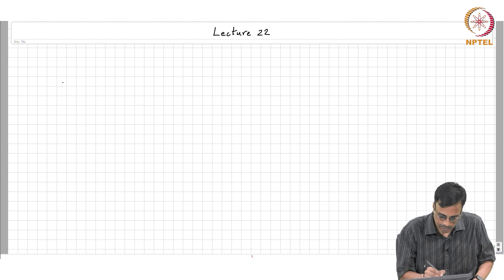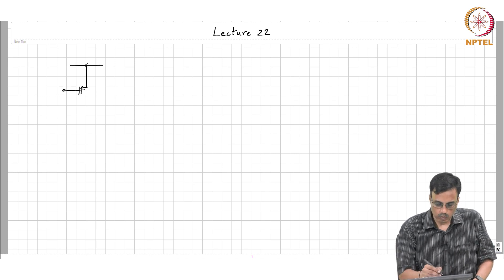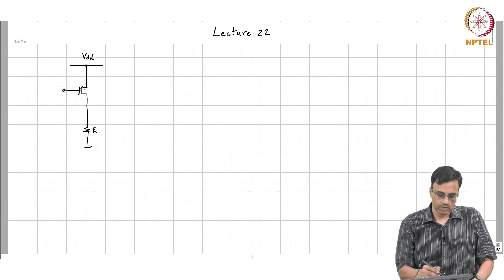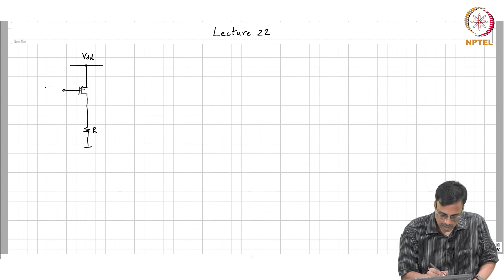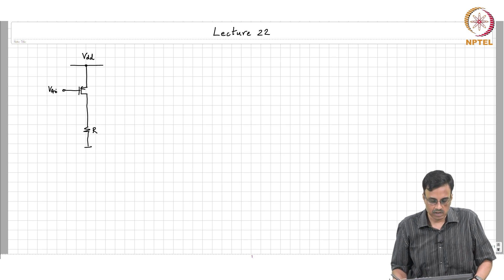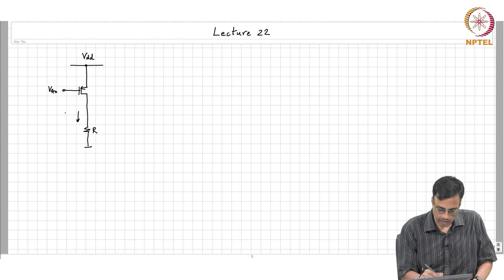In the last class we were discussing the active load. We were doing this in respect to a PMOS common source amplifier, but the discussion remains largely unchanged with an NMOS amplifier. The assumption is that the gate voltage is biased at a potential Vg0, the transistor is operating in saturation and carries a drain current ID = I0.